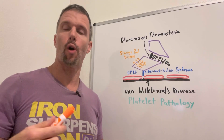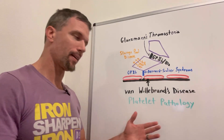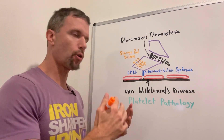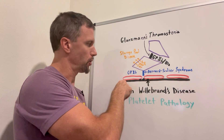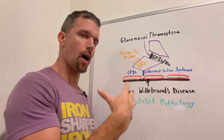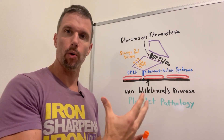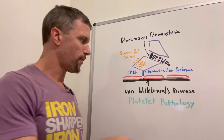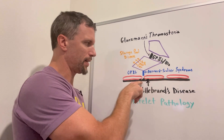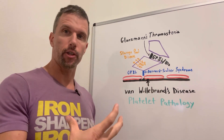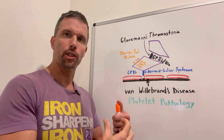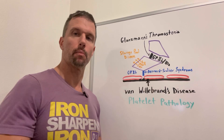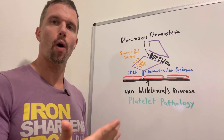We'll discuss one cause of hypocoagulable states: platelet pathology. Whenever you have an endothelial injury in a blood vessel, your basement membrane collagen and von Willebrand factor gets exposed, and that's the first step in creating a platelet plug. If you have von Willebrand's disease — a defect or mutation in the von Willebrand factor so it can't attach to the platelet — you won't have that first step, and you'll have a bleeding disorder. You'll bleed more than you should: hypocoagulable.